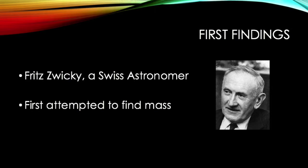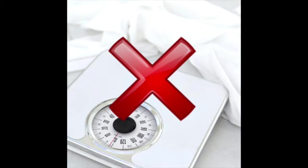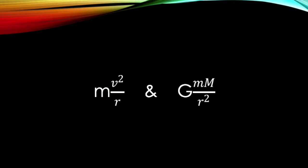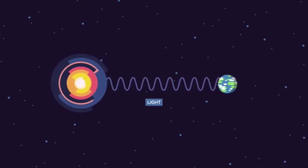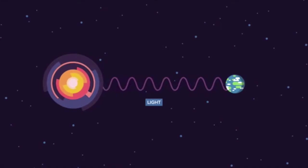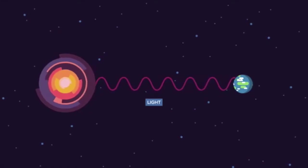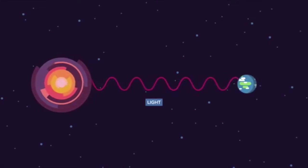Finding dark matter was first contemplated when astronomical physicists attempted to determine the mass of a galaxy. Since you cannot just place a galaxy on the scales, scientists follow two procedures. Firstly, working backwards by using the speed of rotation due to gravity, then applying the gravitational constant to calculate the mass. Or, analyzing the redshift using the Doppler effect and Hubble's law through advanced telescopes.